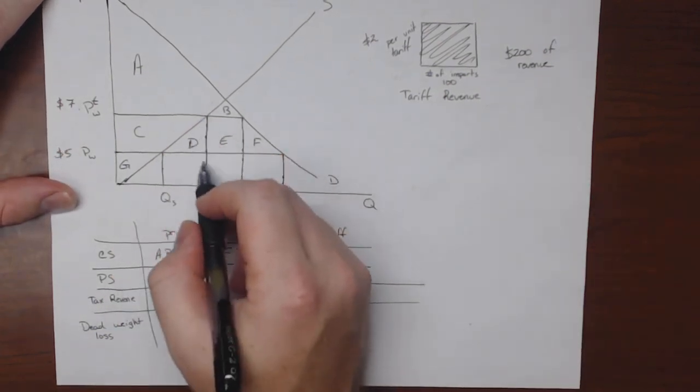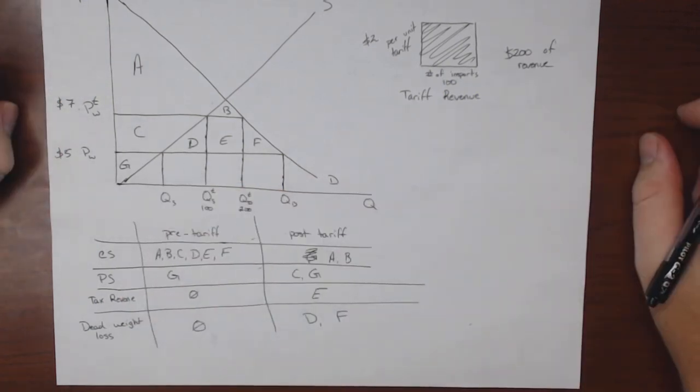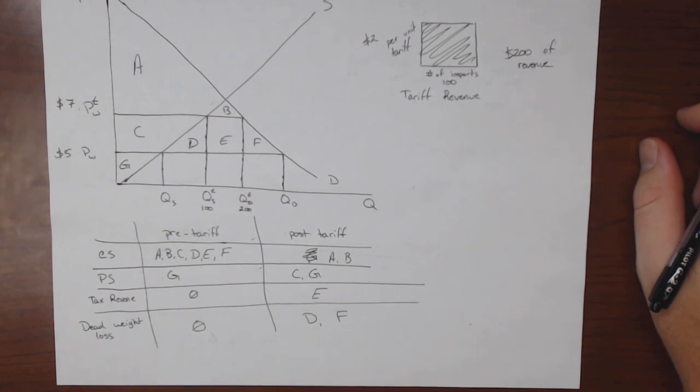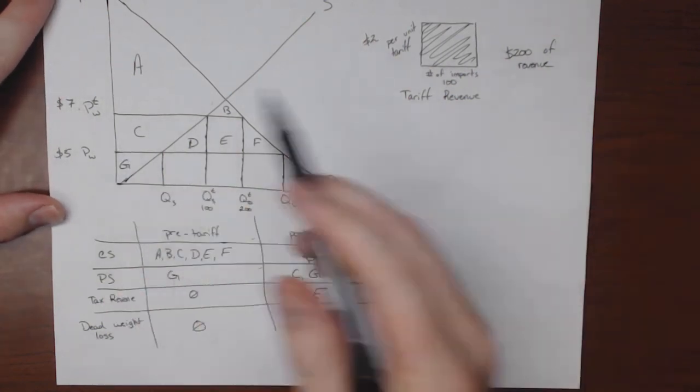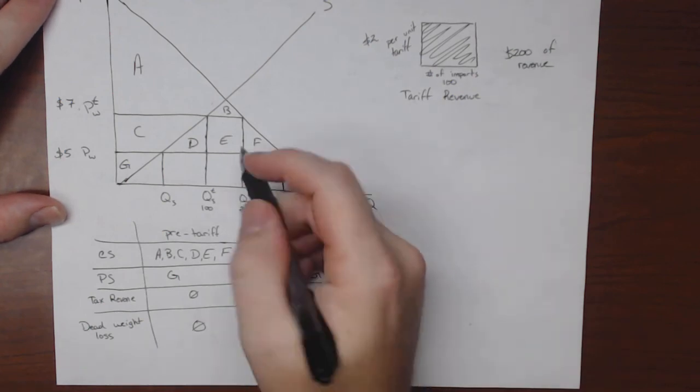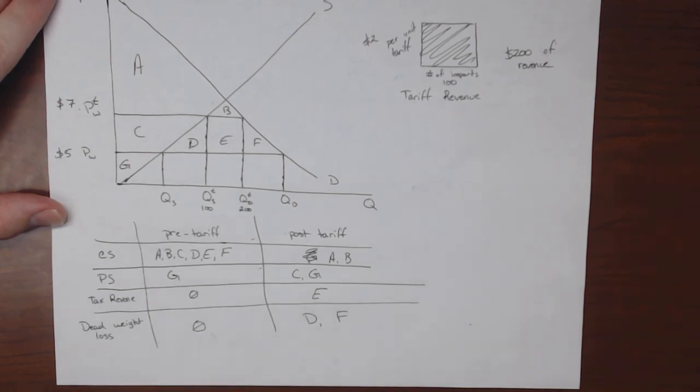And so D here is a deadweight loss because we have producers producing things that they're not quite as good at as someone else in the world. So as a result of the tariff, we end up having tax revenue and we have two shapes of deadweight loss.